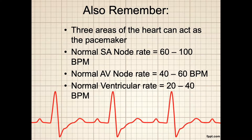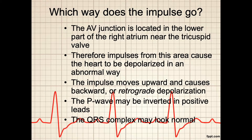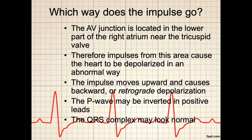If the AV node is now operating as the pacemaker, there will be some changes on the monitor to note. Since the AV junction is located in the lower part of the right atrium near the tricuspid valve, impulses originating from this area will be depolarized in an abnormal way. From a positive lead perspective, some impulses heading toward the atria will move away from the lead and look different from a sinus rhythm. The impulse moves upward, causing backward or retrograde depolarization, meaning the P wave may be inverted in positive leads, although the QRS complex should look normal if there is no accompanying AV block.